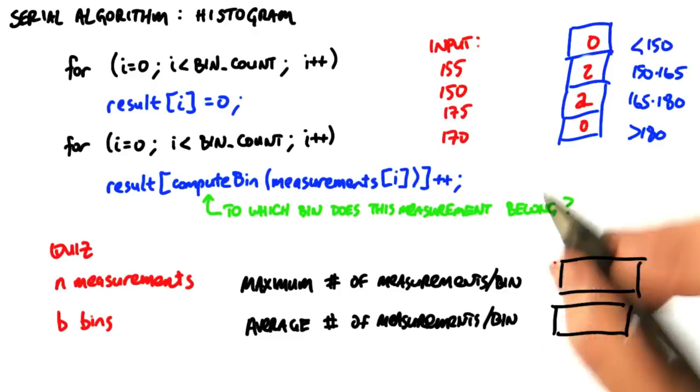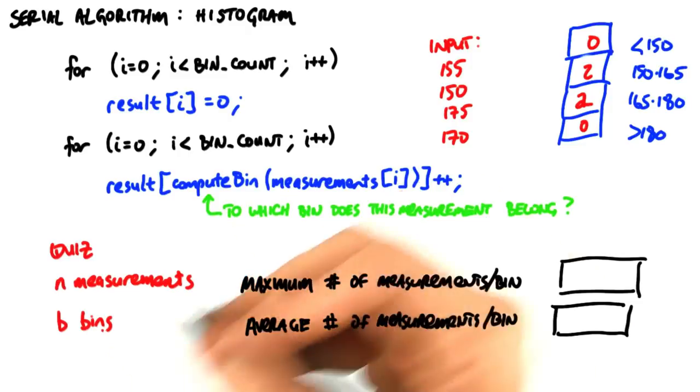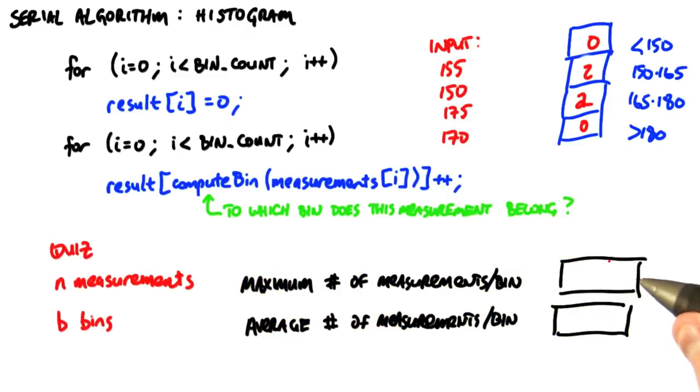So, a couple of quick questions to make sure you understand the histogram. Let's say we have n measurements and b bins. As a function of n and b, what is the maximum number of measurements we would possibly ever see per bin, and what is the average number of measurements you would see per bin?